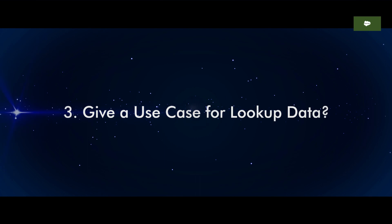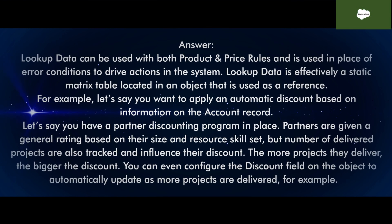Question 3: Give a use case for lookup data. Lookup data can be used with both product and price rules and is used in place of error conditions to drive actions in the system. Lookup data is effectively a static matrix table located in an object that is used as a reference. For example, let's say you want to apply an automatic discount based on information on the account record using a partner discounting program. Partners are given a general rating based on their size and resource skill set, but number of delivered projects are also tracked and influence their discount — the more projects they deliver, the bigger the discount. You can even configure the discount field on the object to automatically update as more projects are delivered.